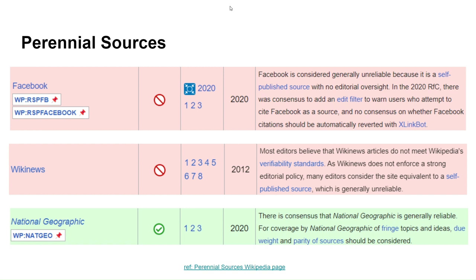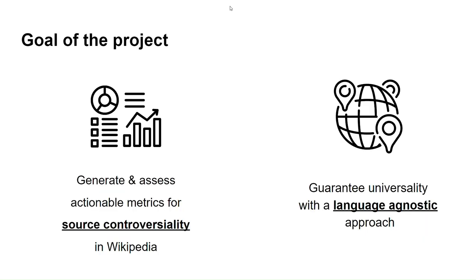But it's also a limited resource because it requires editors to join and discuss before having a domain assessed. So the goal of our project is to help in this process by developing some metrics to automate source reliability detection.